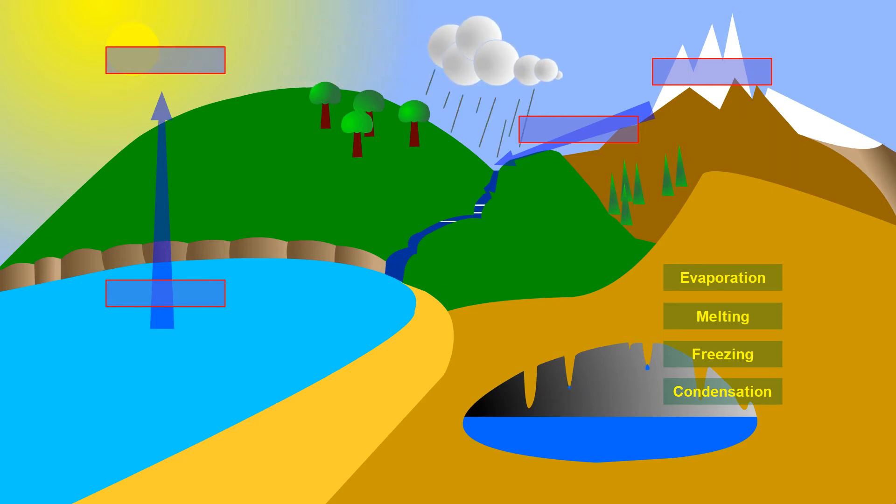Hi, on Earth water exists in three states: the solid state, the liquid state, and the gas state. In the liquid state, it is the sea, the oceans, and the clouds. In the solid state, we see it as snow and ice. And in the gaseous state, we do not see it.